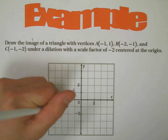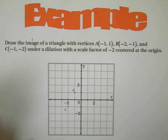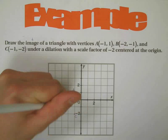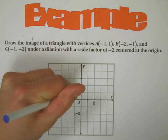B is at negative two, negative one, which would be down here. And C would be at negative one, negative two, which would be down here. So here's the original image.